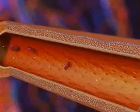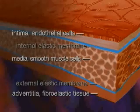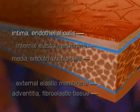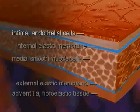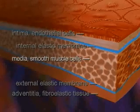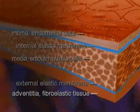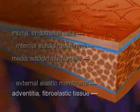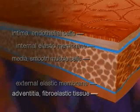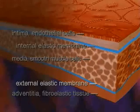The normal artery wall is composed of three layers: the intima, the media, and the adventitia. The intima, or inner layer, is composed of a single layer of cells called the endothelium. The media contains mostly smooth muscle cells that enable the vessel to dilate or constrict. The adventitia, or outermost layer, is composed mostly of fibroelastic tissue, and is separated from the media by the external elastic membrane.